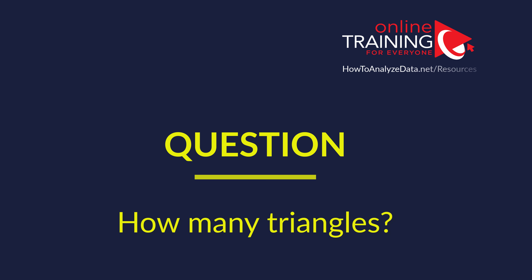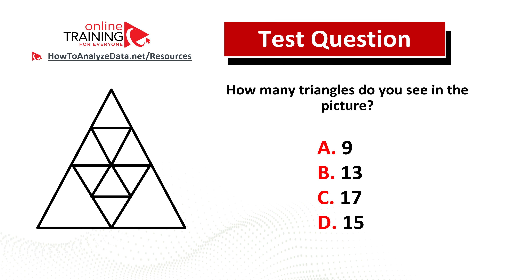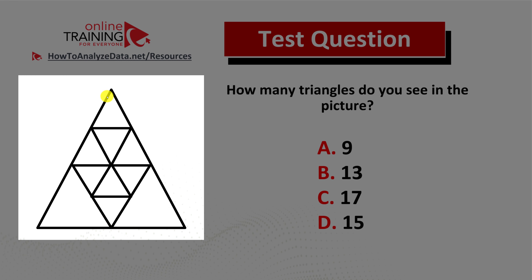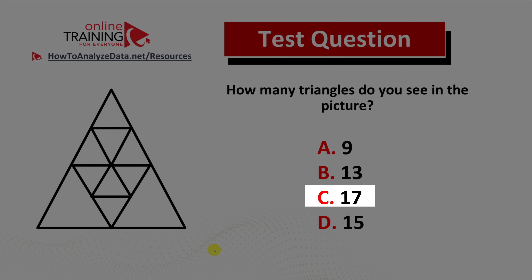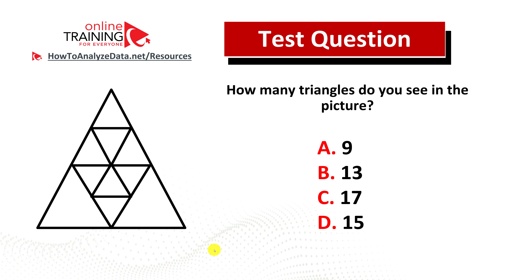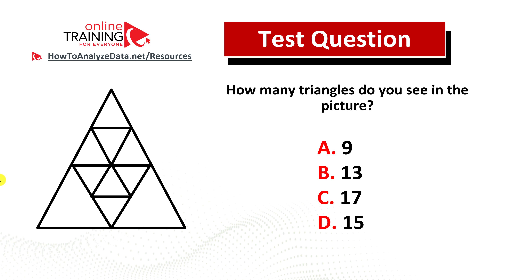Let me share a tricky question which tests your analytical skills: how many triangles do you see in the picture? You have a triangle presented with smaller triangles inside, and four possible choices — choice A, 9; choice B, 13; choice C, 17; and choice D, 15. Now might be a good time to pause this video to see if you can come up with the solution on your own.